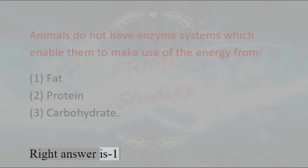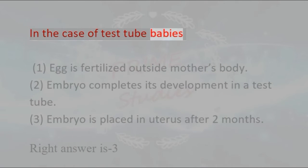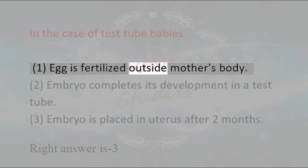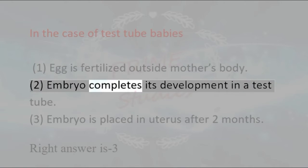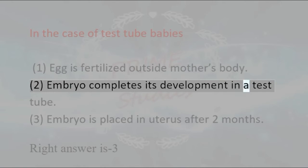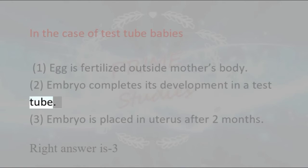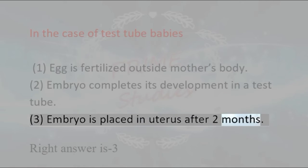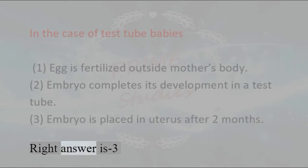In the case of test tube babies: 1. Egg is fertilized outside the mother's body, 2. Embryo completes its development in a test tube, 3. Embryo is placed in the uterus after 2 months. Right answer is 3.